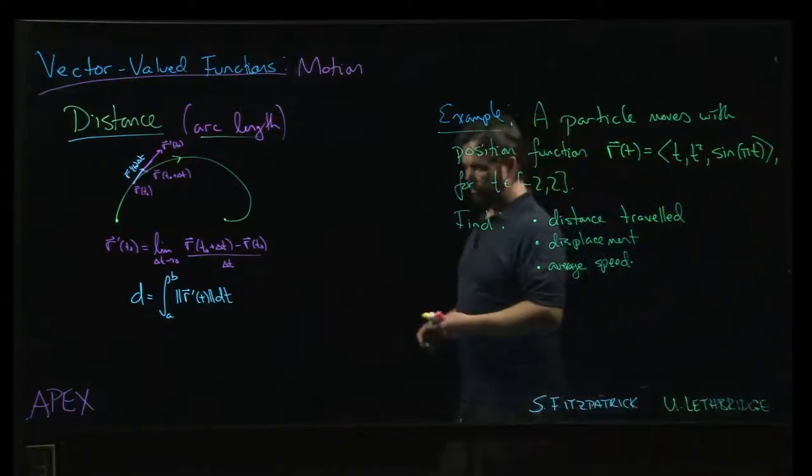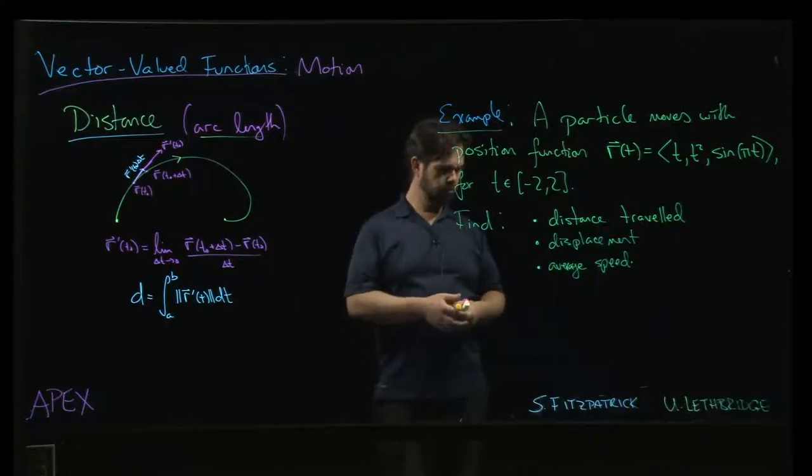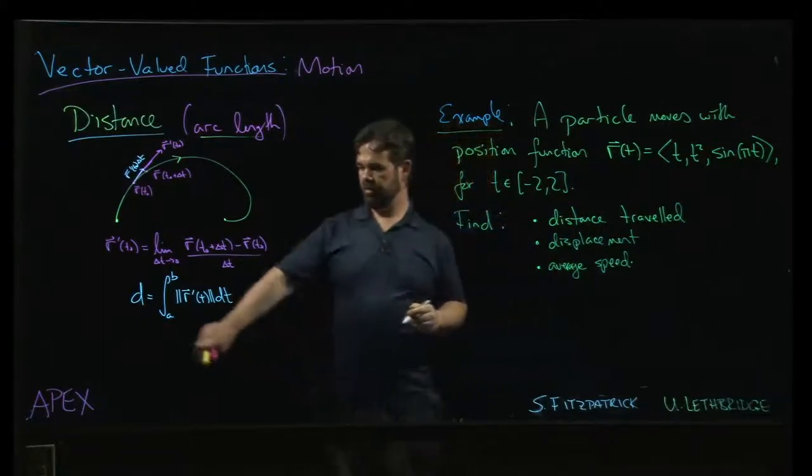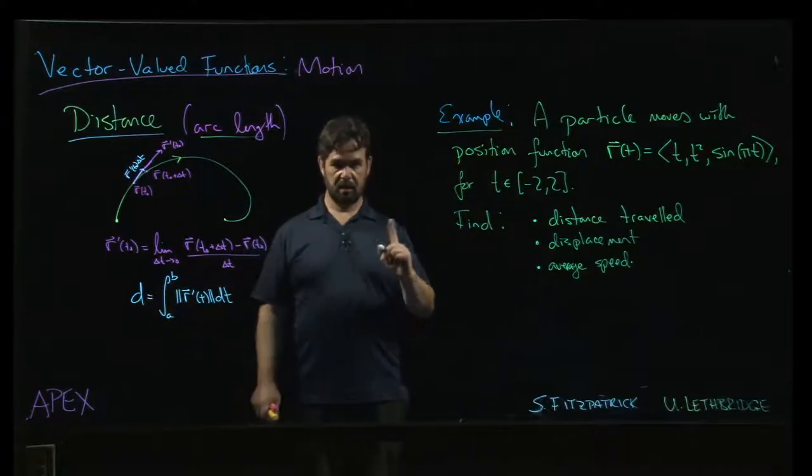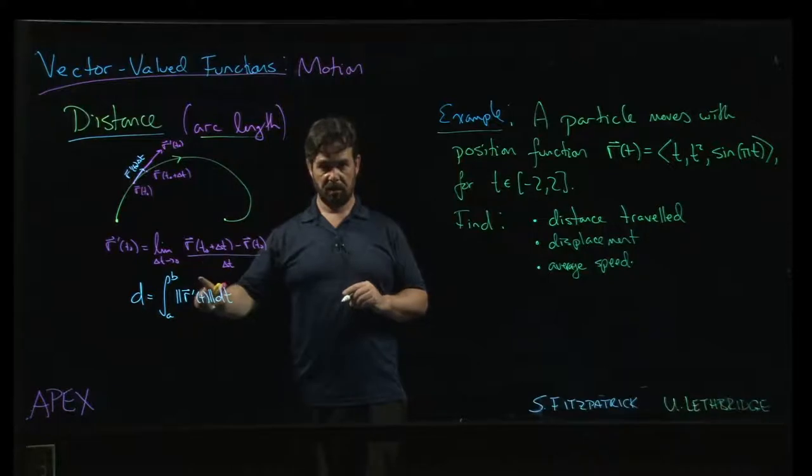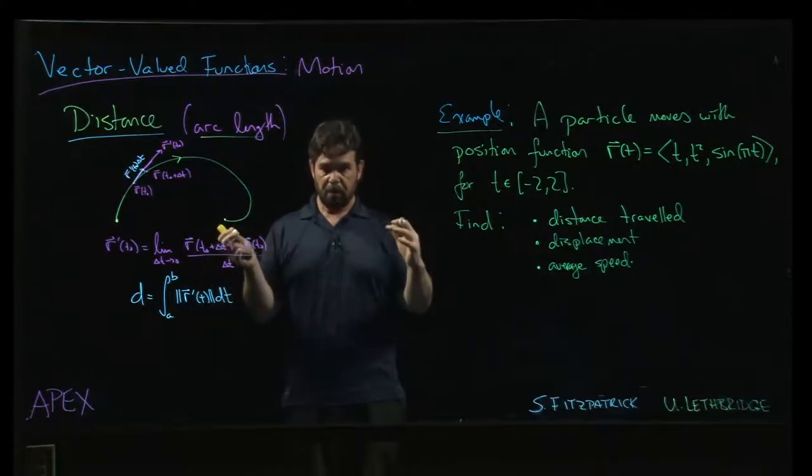So let's say we want to find the distance traveled in this particular example. Well, the first thing we'd have to do is get the derivative, because the distance traveled is going to be the integral of the magnitude of the derivative. It's the integral of the speed.